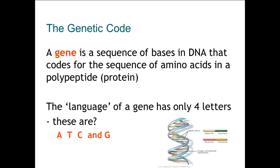In some of the earlier videos, we have discussed how genetic material is organized. The smallest subunit of genetic material is DNA, and DNA goes on to form genes. Genes are found on chromosomes, and chromosomes are found within the nucleus of a cell. Looking back specifically at DNA,